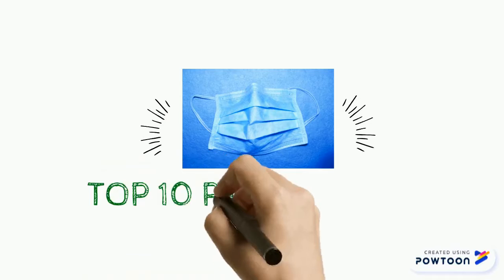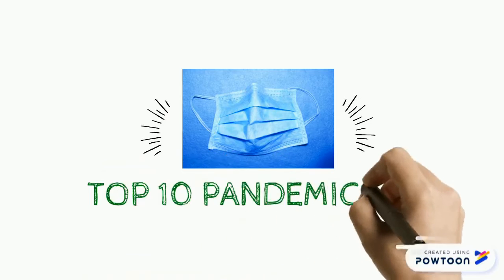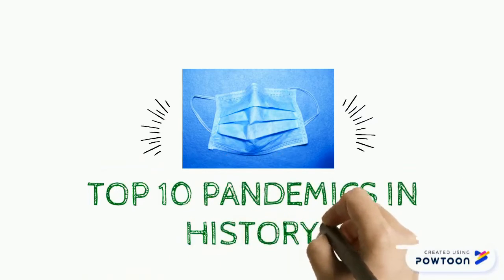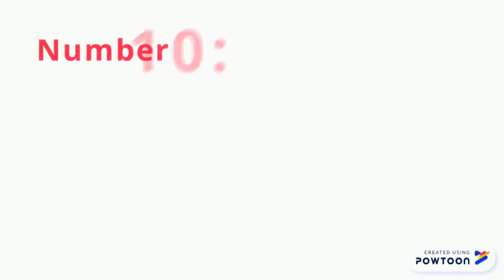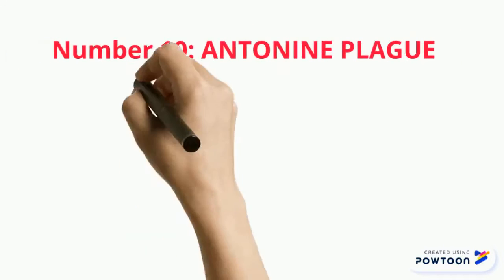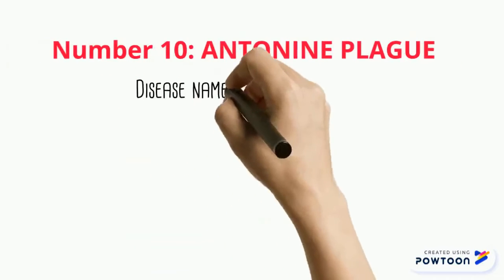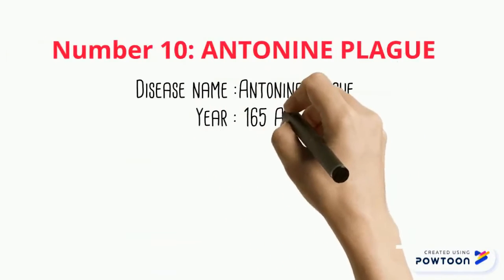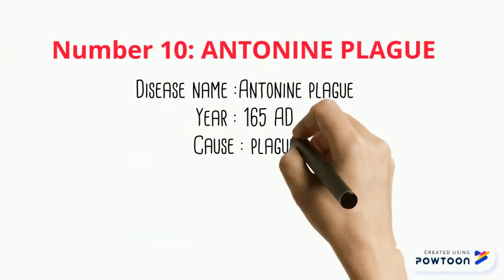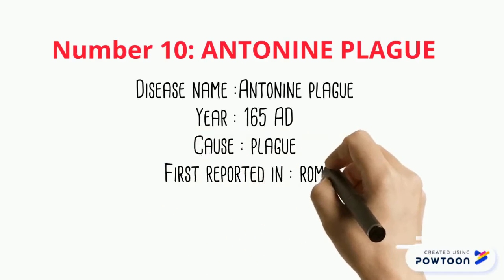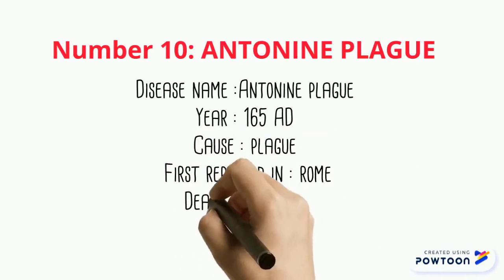Here is the list of the top 10 pandemics in the history of the world and what impact they had on society. Number 10 is the Antonine Plague, also known as the Plague of Galen. This unknown disease was brought back to Rome by soldiers returning from Mesopotamia around 165 AD, spreading a disease which would end up killing over 5 million people.